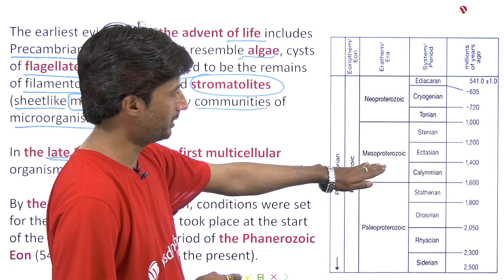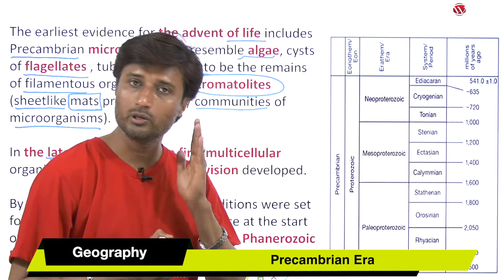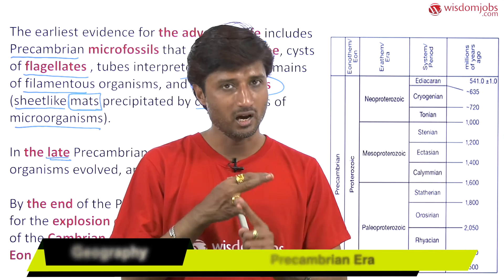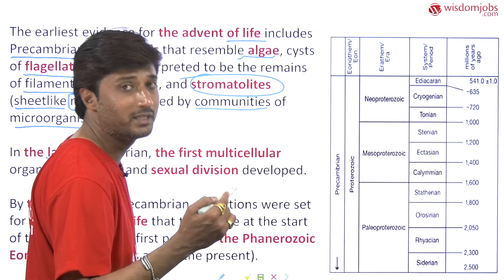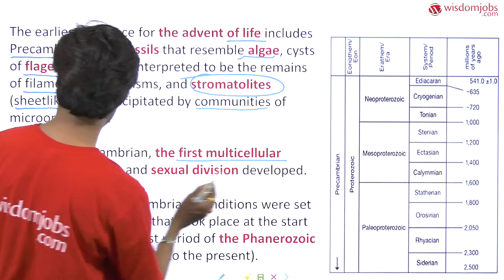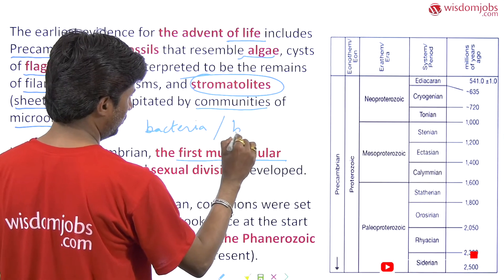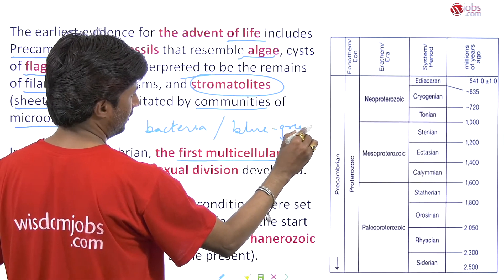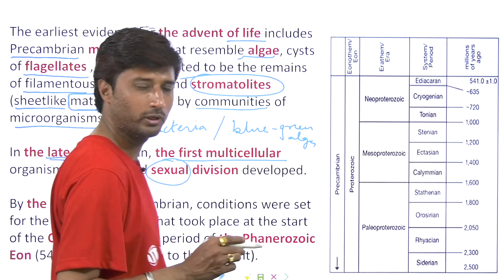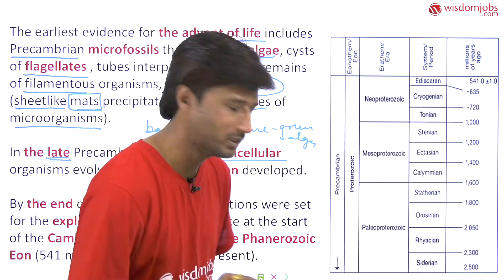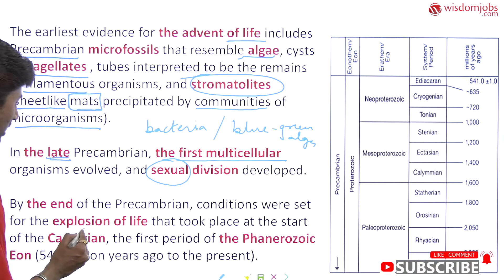In the late Pre-Cambrian, during the Proterozoic, which can be divided into early, middle, and late Proterozoic, the first multicellular organisms evolved. These include bacteria and cyanobacteria, that is blue-green algae. Sexual division, involving processes like meiosis and mitosis, also developed during this period.